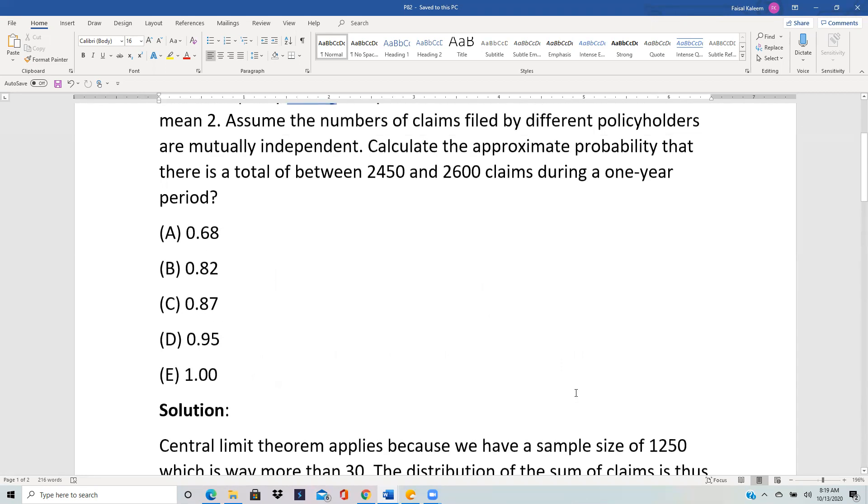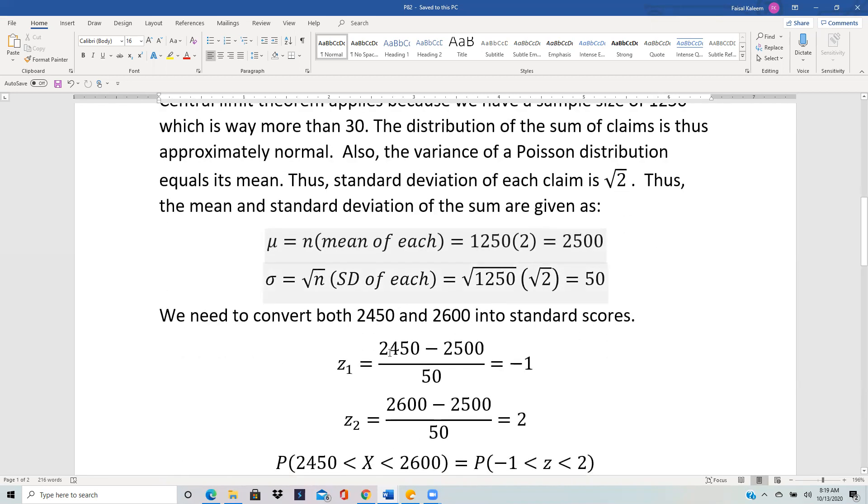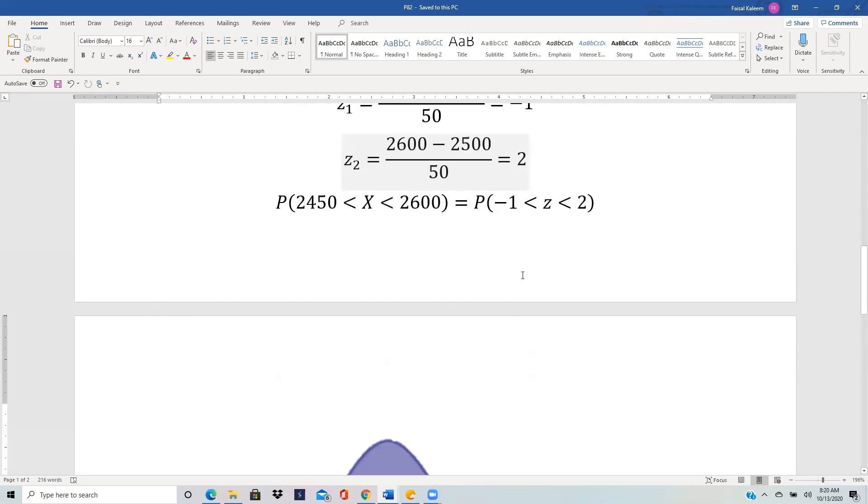So now we were asked between 2450 and 2600 claims total. So we need to convert these two into Z-scores. So the 2450 would be 2450 minus the mean over standard deviation. That's negative 1. And similarly, the 2600 will be 2. So we need probability of Z between negative 1 and 2.